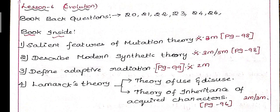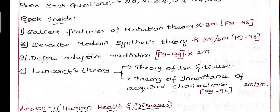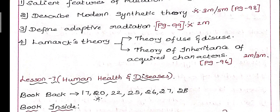Lesson 6 book back questions: 20, 21, 22, 23, 24, and 26. Book inside: Salient features of mutation theory, important 3-mark on page 98 with 4 points. Next, describe modern synthetic theory on page 98, 5-mark. Third, define adaptive radiation, 2-mark on page 99. Next, Lamarck's theory.